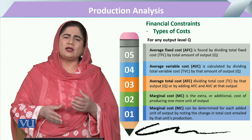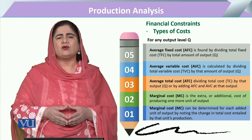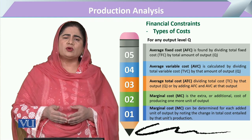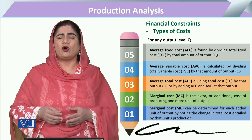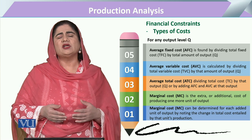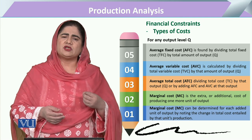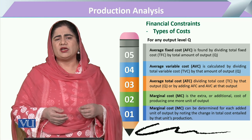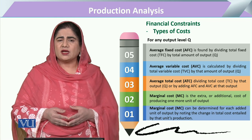Now coming to marginal cost: marginal cost is calculated as the change in total cost, and since total cost includes both fixed cost and variable cost, it captures changes in both. Whenever there is a change of one unit in output, that requires additional utilization of certain inputs. The change in total cost resulting from producing one additional unit of output is termed the marginal cost.